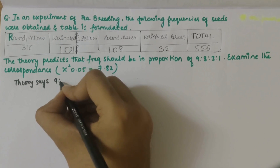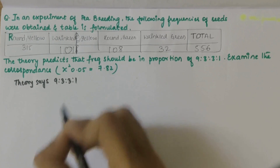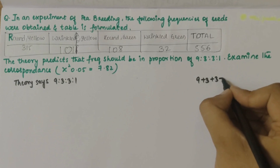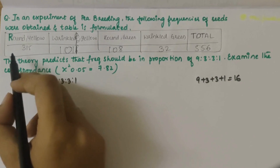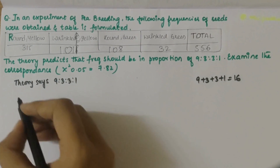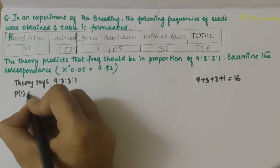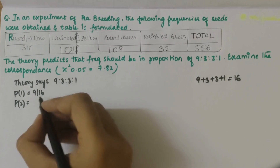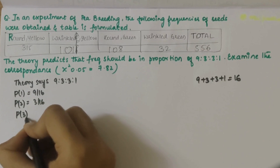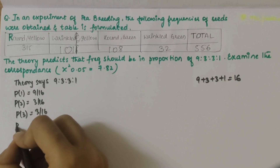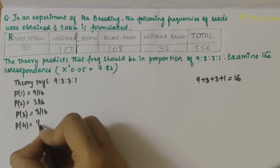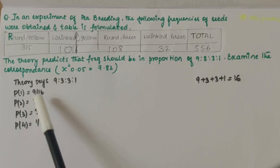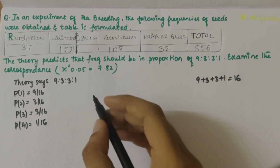The ratio should be 9:3:3:1. Adding these up: 9 + 3 + 3 + 1 = 16. So the probability of getting the first one would be 9/16, p2 would be 3/16, p3 would be 3/16, and p4 would be 1/16. Now we know the probabilities of getting these, so let's calculate the frequencies.